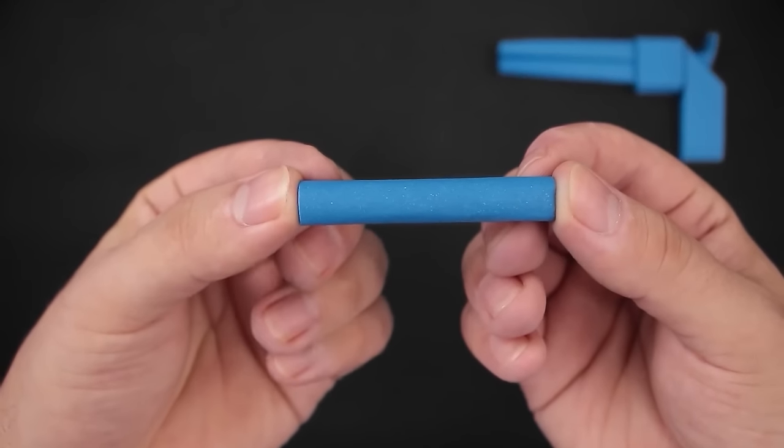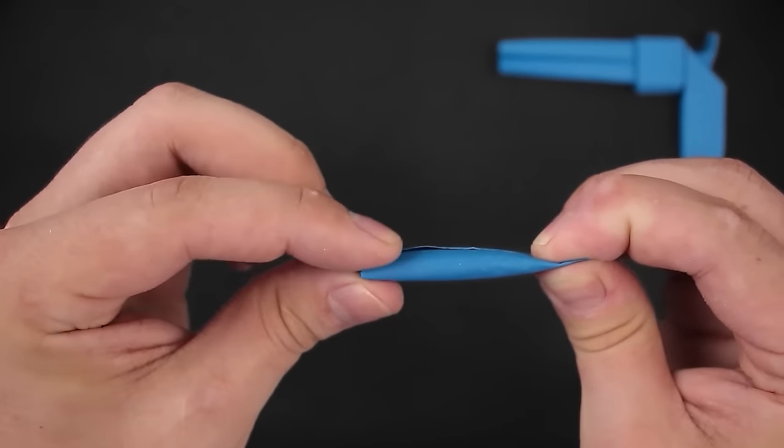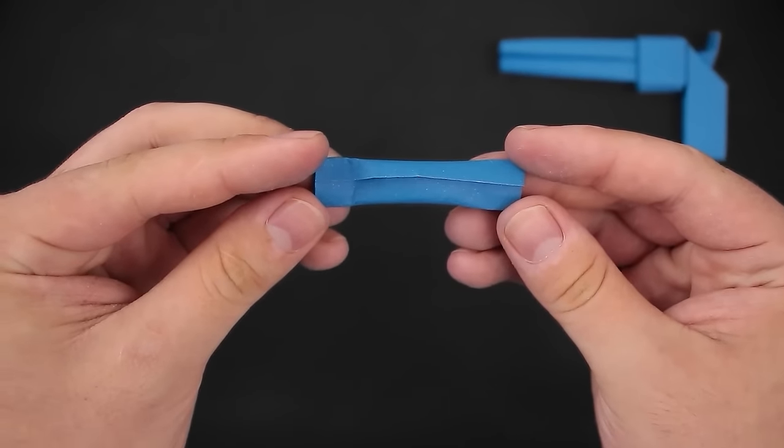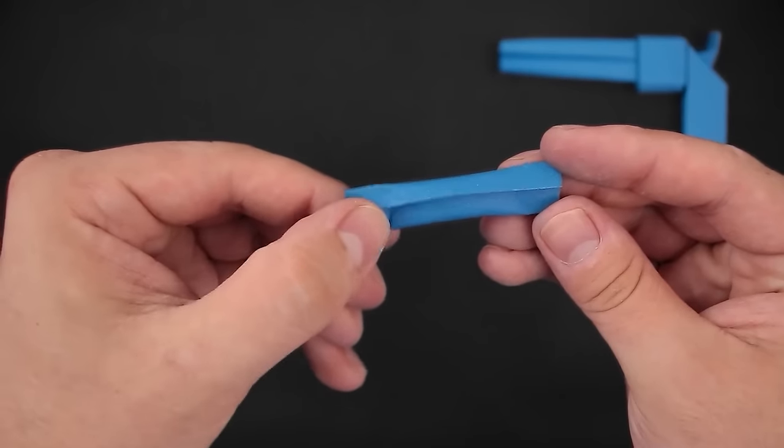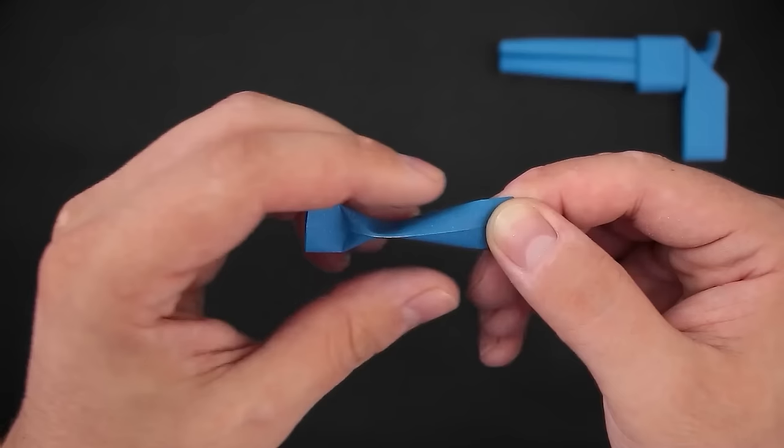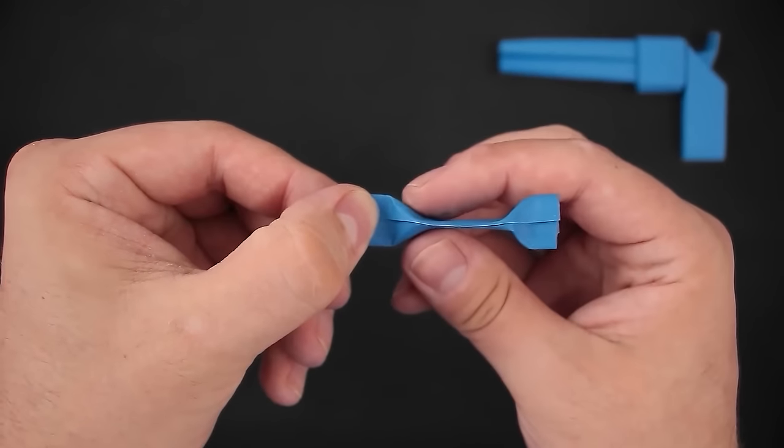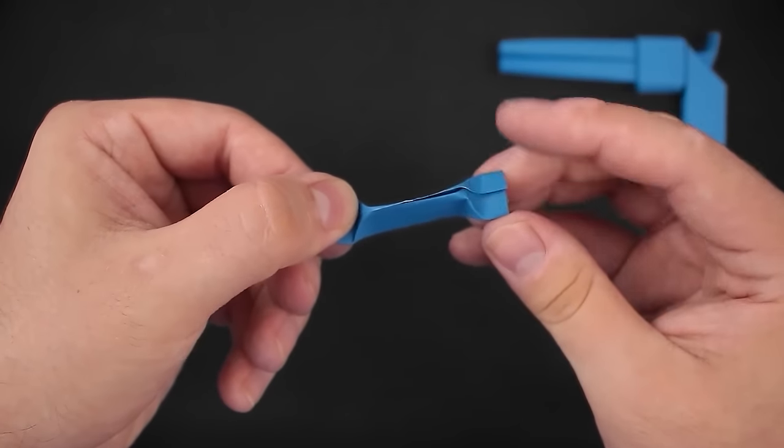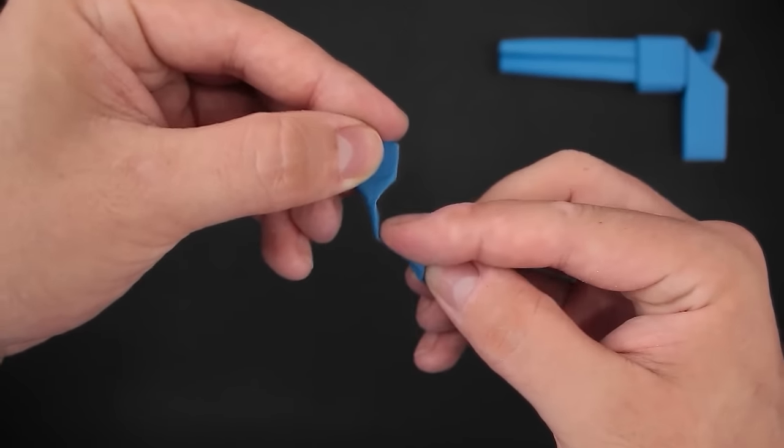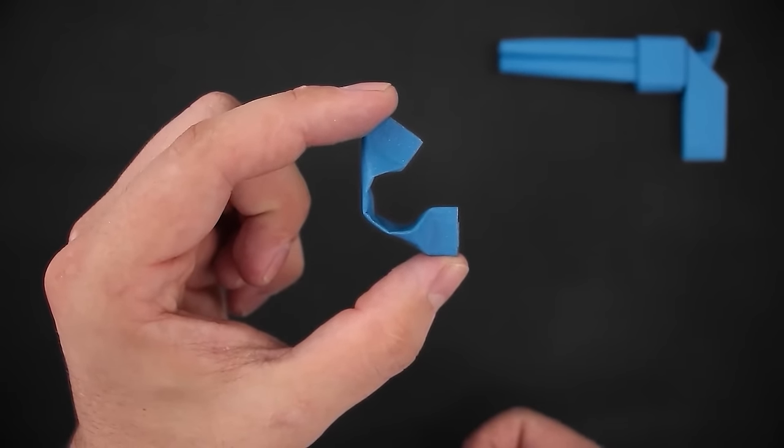And on the remaining part, we'll flatten the two ends in one direction. And then the middle in the opposite direction. Now, let's bend this part like this. And then we'll fit it where the trigger would be.